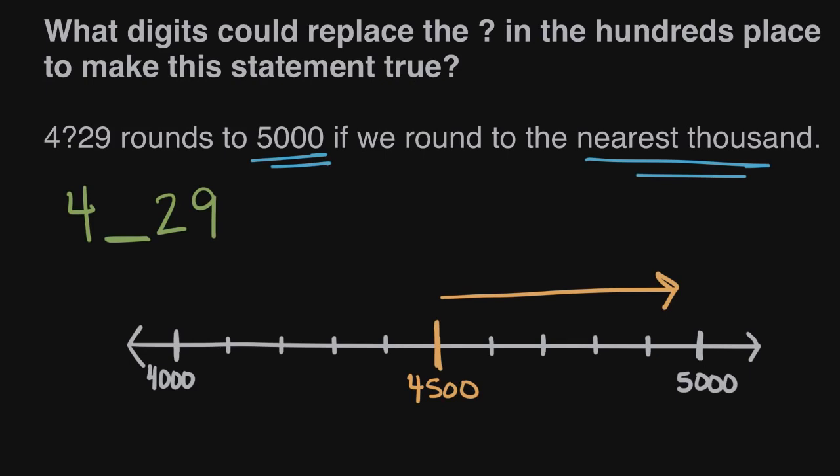And so we could try, let's just put a 5 in. 4,529 would be right after 4,500, somewhere about like this. That is closer, just barely, but it's closer to 5,000. So 5 works. 5 is a digit that we could use.